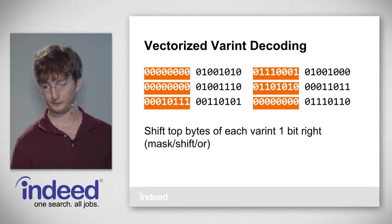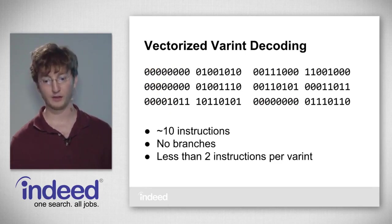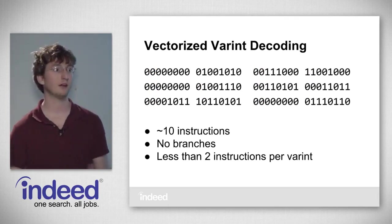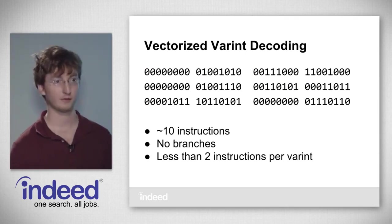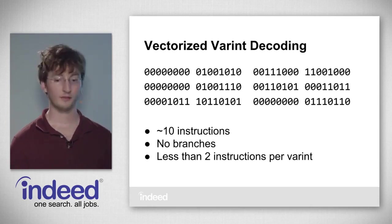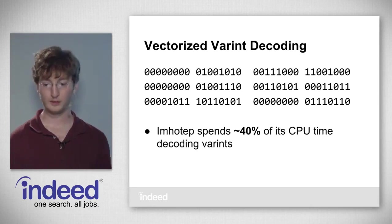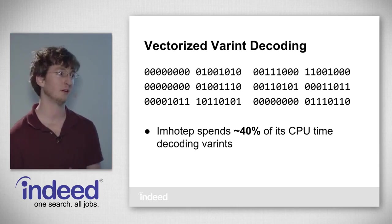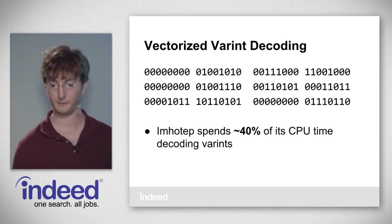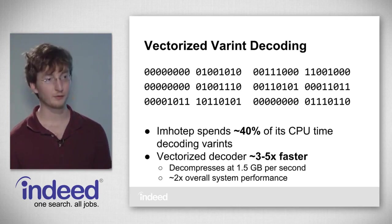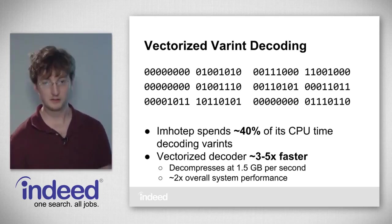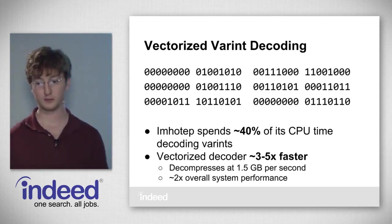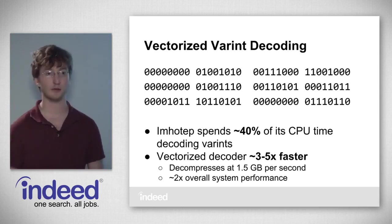The result is around 10 instructions, no branches, and less than two instructions per varint. This is a lot faster than doing it one byte at a time. This matters because Emotep spends around 40% of its CPU time decoding varints — it's the bottleneck. The vectorized decoder is around three to five times faster than the one originally pulled from Lucene, decompresses at 1.5 gigabytes per second, and switching to it gave us around double the overall system performance.